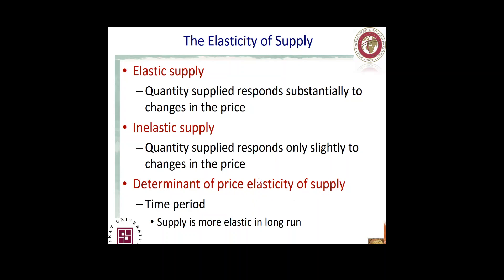A key determinant of price elasticity of supply is the time period — very similar to price elasticity of demand. In the short run, supply tends to be less elastic: people don't immediately give up buying things so supply continues. Over the long run, supply becomes more elastic because people adapt by finding substitutes or changing their consumption behavior, and producers adjust accordingly.